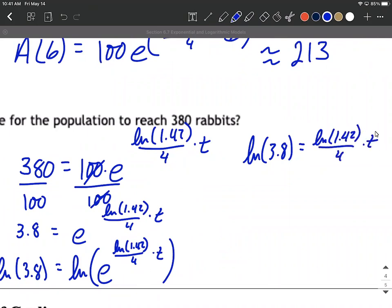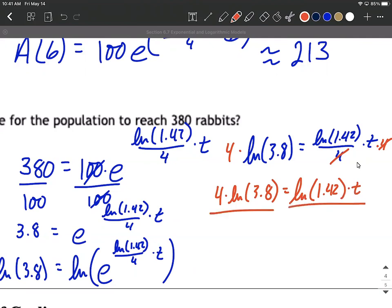And to complete our solving this down what I'm going to do is first get rid of the 4 by multiplying both sides by 4. So multiplying and dividing by 4 create a 1. So we have 4 times the natural log of 3.8 equals the natural log of 1.42 times t. And to get t all by itself it's multiplied by that natural log so we'll divide both sides by that natural log of 1.42. That'll put t all by itself and give us this as an exact answer.